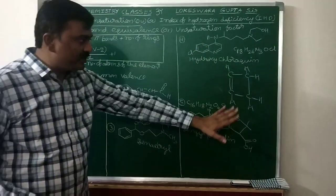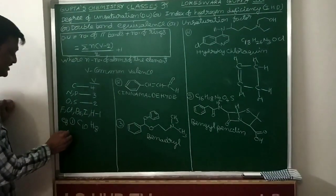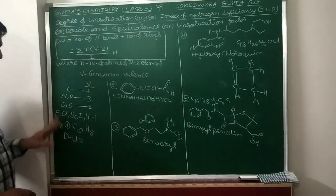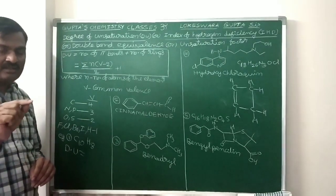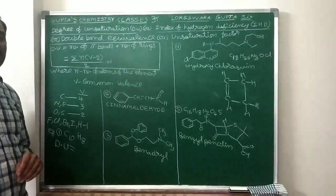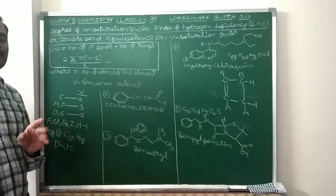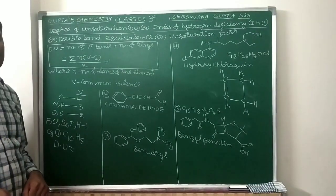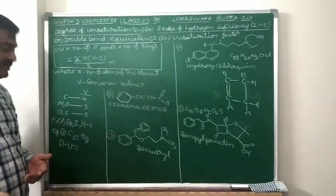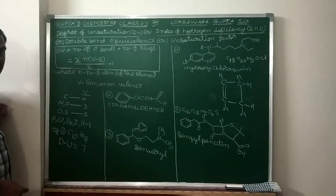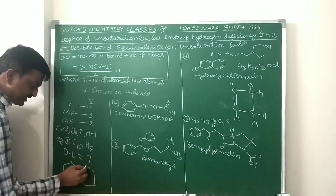Now come to the examples. Here I am going to explain five examples. First example: C₁₀H₈. What is the degree of unsaturation? With 10 carbons, the saturated alkane formula gives C₁₀H₂₂ — so 22 hydrogens should be there. But here only 8 hydrogens are present. Deficiency: 22 − 8 = 14. That is 7 pairs. So degree of unsaturation is 7. It is naphthalene.